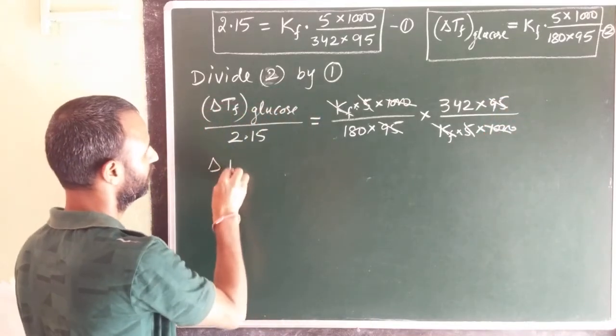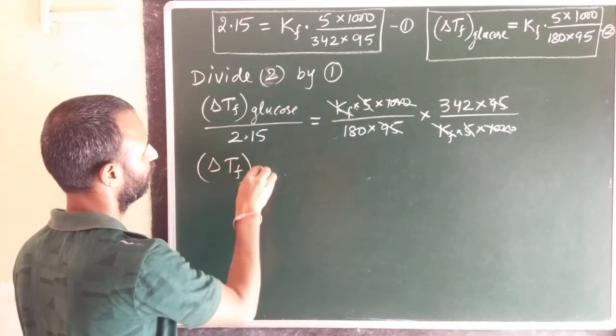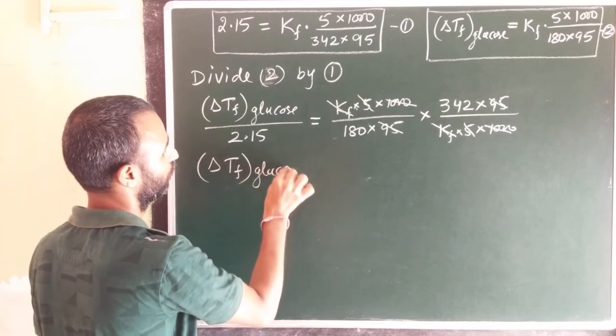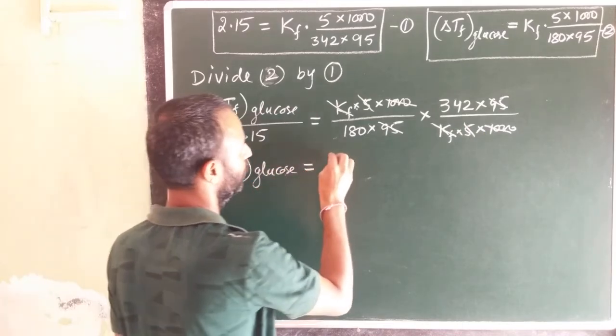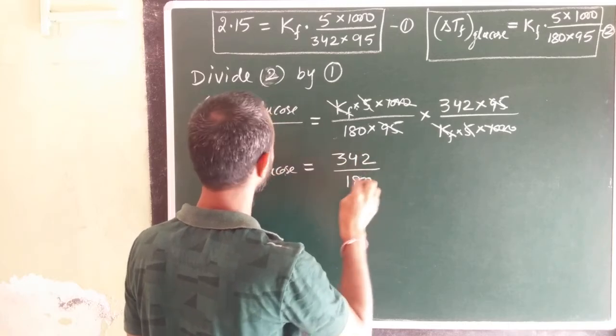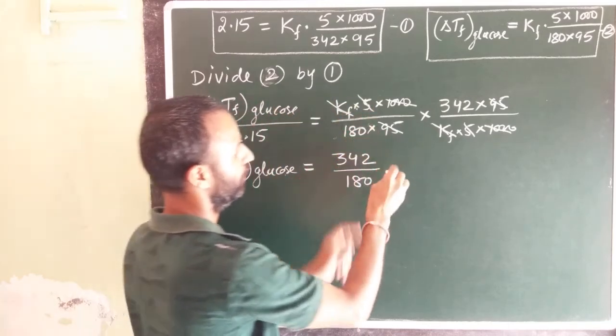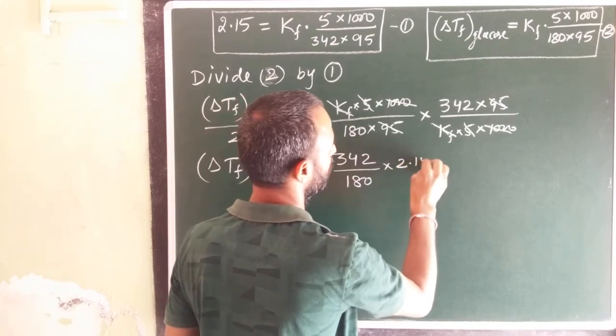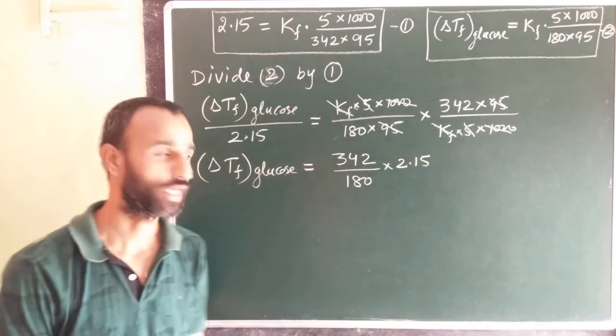What do we get? Delta Tf of glucose is equal to 342 over 180 and this value into 2.15, right.